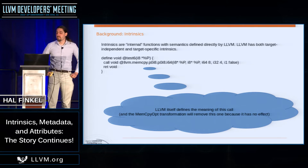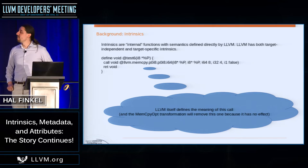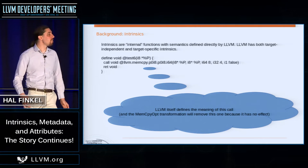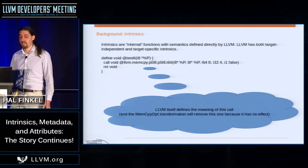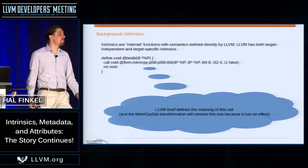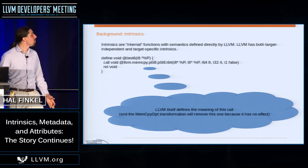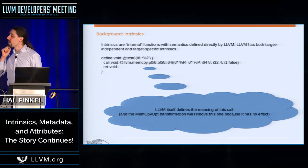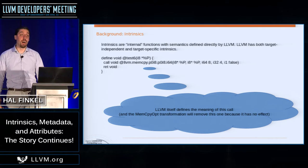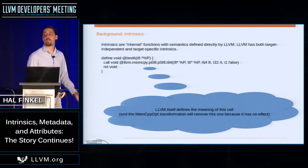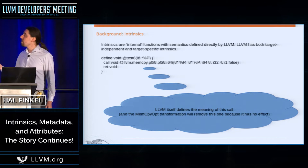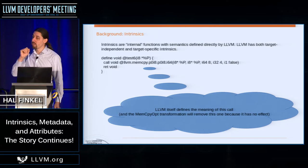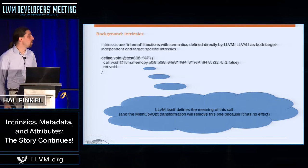I have a couple of sides of background: one for intrinsics, one for metadata, one for attributes. LLVM supports intrinsics — things that look like functions. They have a special name; they all start with 'llvm dot something.' They're special functions you don't have to define, just declare syntactically, but their semantics are defined internally by the compiler. LLVM now has hundreds of these, including target-specific ones. There is also a whole class of target-independent intrinsics that have special meanings and are used to access many features of LLVM.